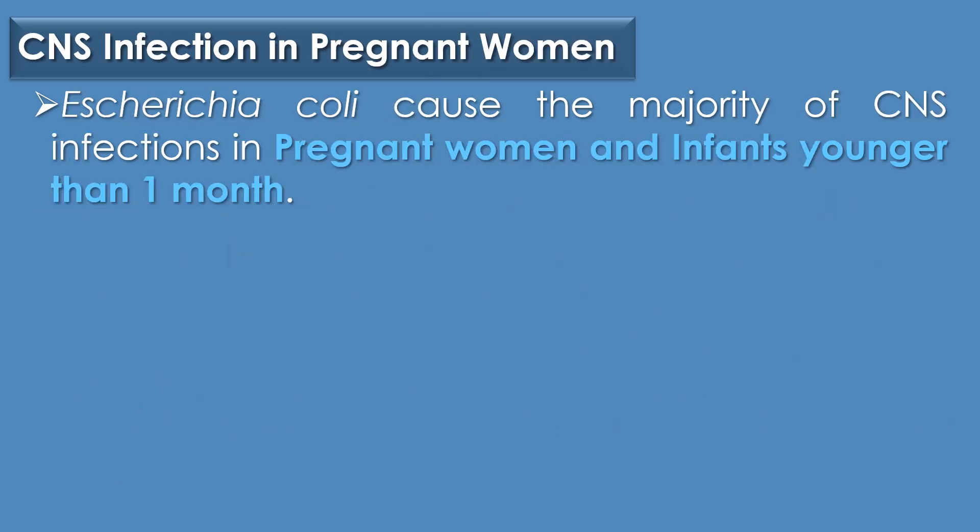The third clinical disease caused by E. coli is central nervous system infection in pregnant women. E. coli causes the majority of central nervous system infections in pregnant women and infants who are younger than 1 month.